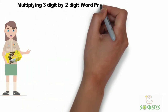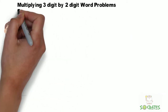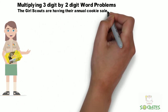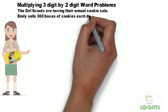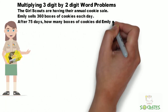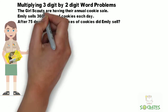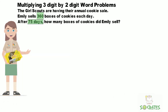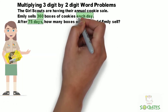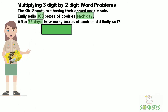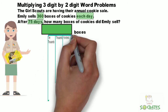Multiplying three-digit by two-digit word problems. The Girl Scouts are having their annual cookie sale. Emily sells 360 boxes of cookies each day. After 75 days, how many boxes of cookies did Emily sell? We know she sells 360 boxes each day for 75 days, so to figure out the total number of boxes, we're going to need to multiply 360 by 75.